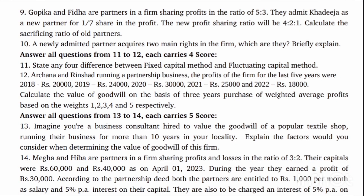Ninth question: Gobika and Fida are partners in a firm sharing profits in the ratio 5:3. They admit Kadija as a new partner for 1/7th share in the profit. The new profit sharing ratio is 4:2:1. Calculate the sacrificing ratio of old partners.